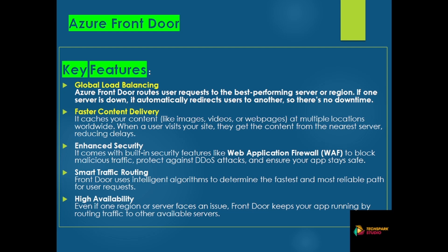Smart traffic routing — Front Door uses intelligent algorithms to determine the fastest and most reliable path for user requests. High availability — even if one region or server faces an issue, Front Door keeps your app running by routing traffic to another available region or server. Now let's understand this with a demo. Let's quickly go to the portal.